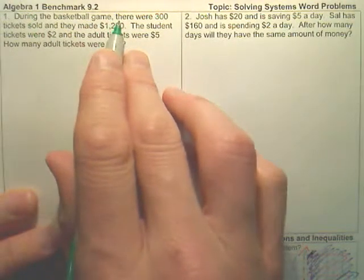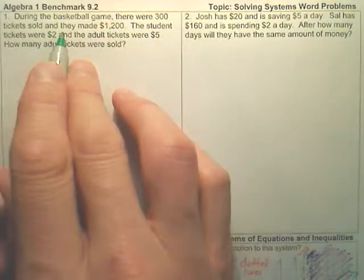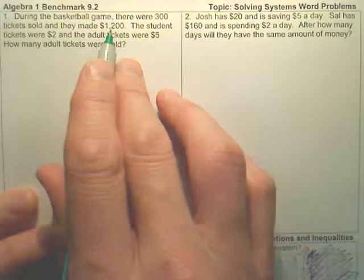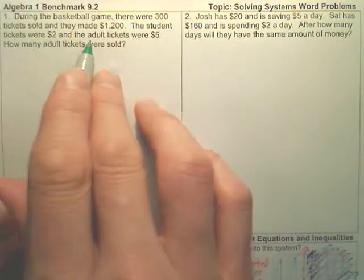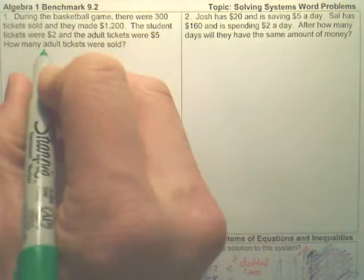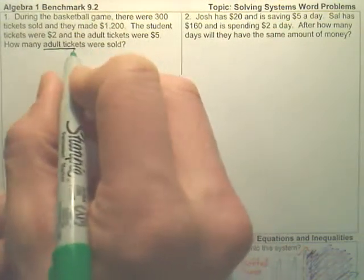Okay, during a basketball game, there were 300 tickets sold and they made $1,200. Student tickets are $2, adult tickets are $5. How many adult tickets were sold is the question.